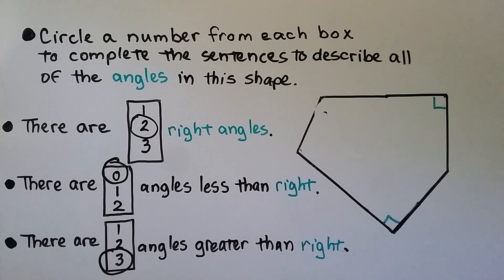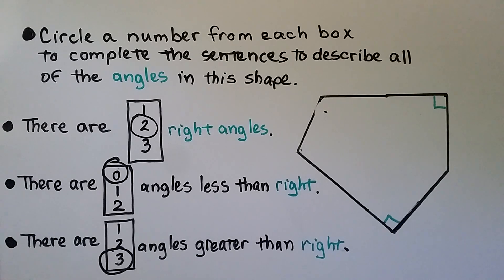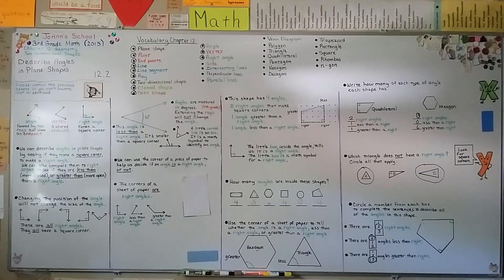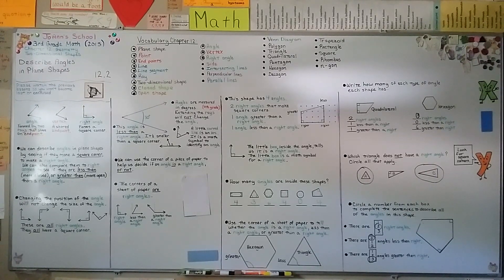As you get older you're going to learn how to actually measure the exact angle in degrees. If a sheet of paper is too big to use for its square corner, you could use a little index card or a card to help you. In our next lesson we're going to be describing different polygons. I hope I'll see you there, and I hope you have a really great day!